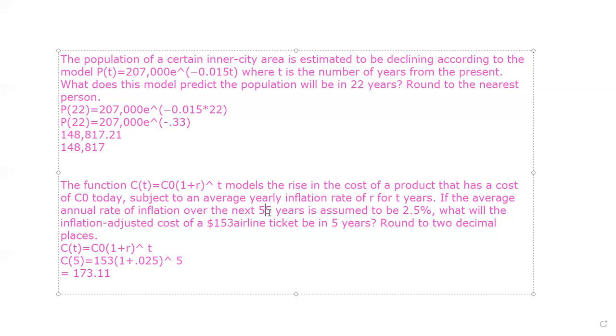So sorry, we're going to do, I'm going to move that to five. I forgot to do that one. So if we are the average rate of inflation over the next five years is 2.5%. What will the adjusted cost of $153 airline ticket be in five years? So this is what you have to really pay attention to is make sure you get everything in the right spot.